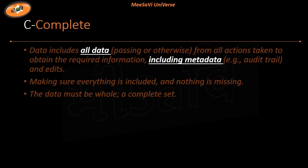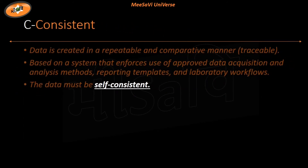Now come the plus-plus parameters. First is C which stands for Complete. Next, if our data is repeated it should not be changed — it should be Consistent and traceable. Where I have to follow a fixed workflow, there should be no change in data.